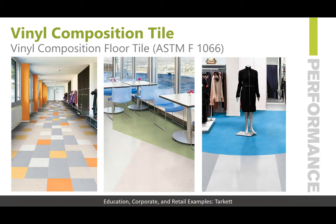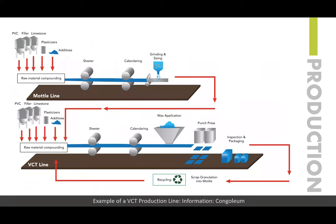In the production of VCT, there are two lines: the model line, which creates the chips that go into the final product, and the overall mixture that creates the product itself. A finish is applied, and then it's punch-pressed into usually 12x12 squares, though other shapes are available. VCT is a mixture of natural limestone filler materials, thermoplastic binder, and color pigments — made by fusing those chips into solid sheets and cutting them into tiles. VCT requires layers of polish to protect its porous surface, because limestone is the main ingredient.